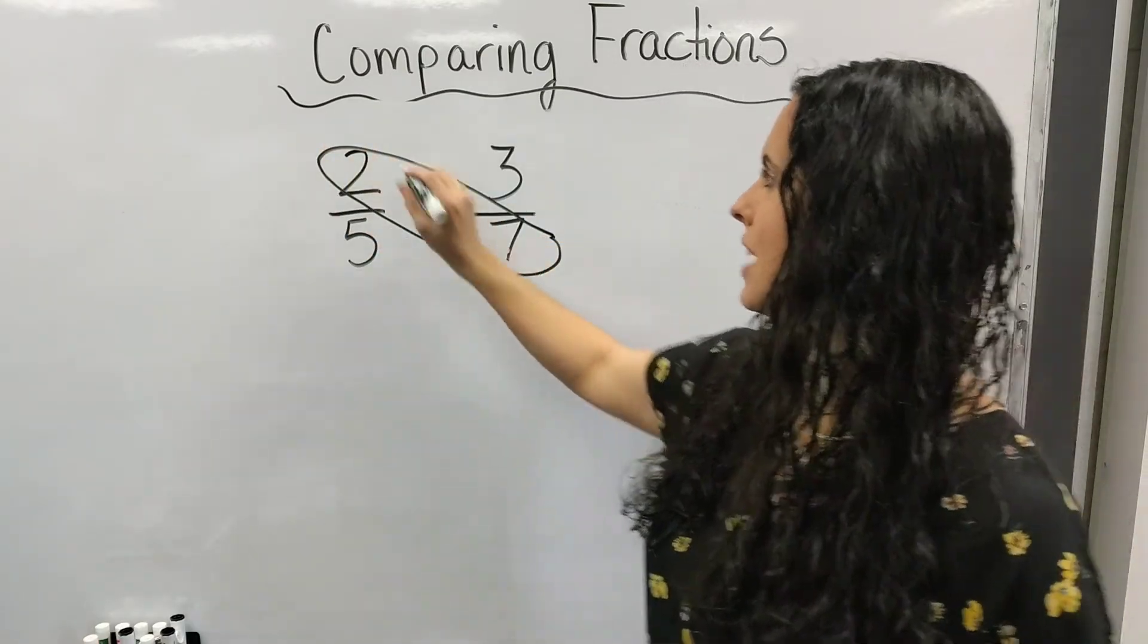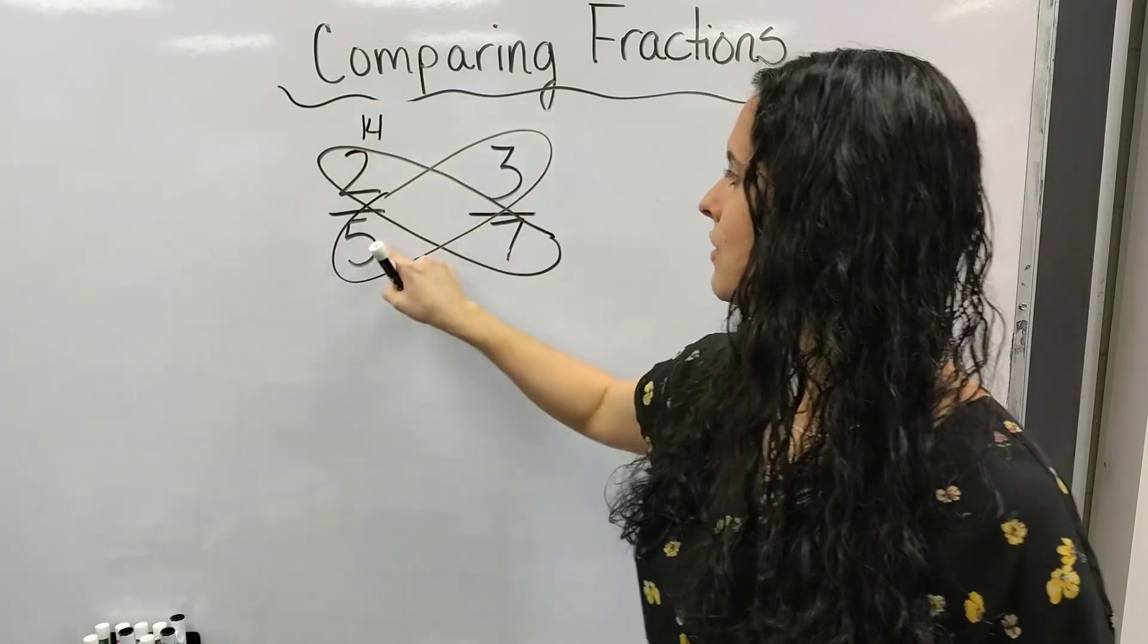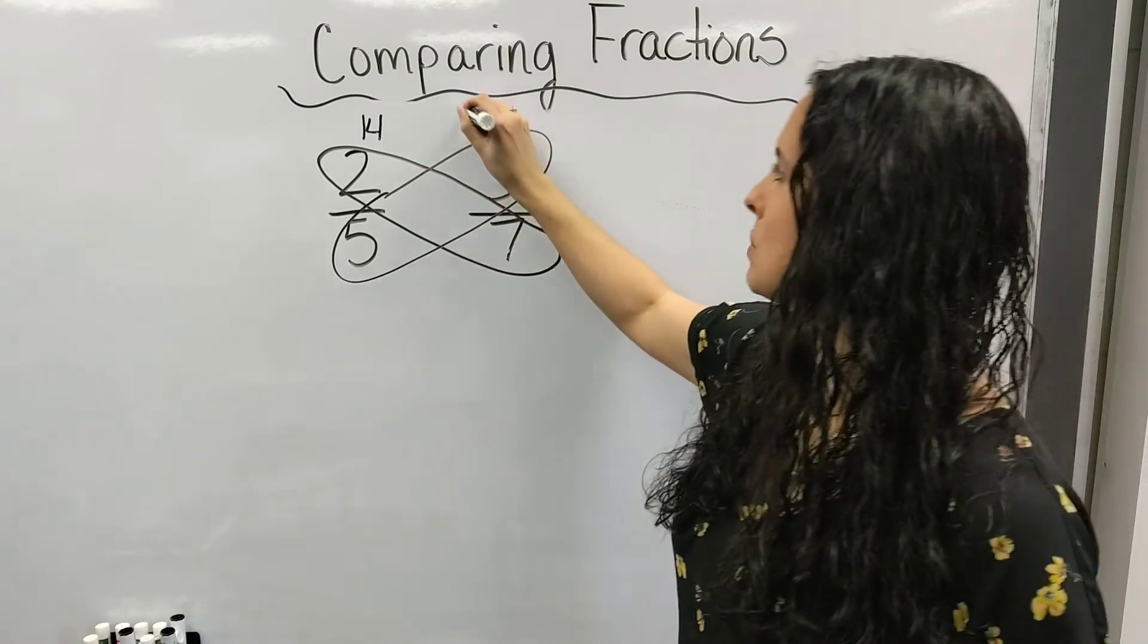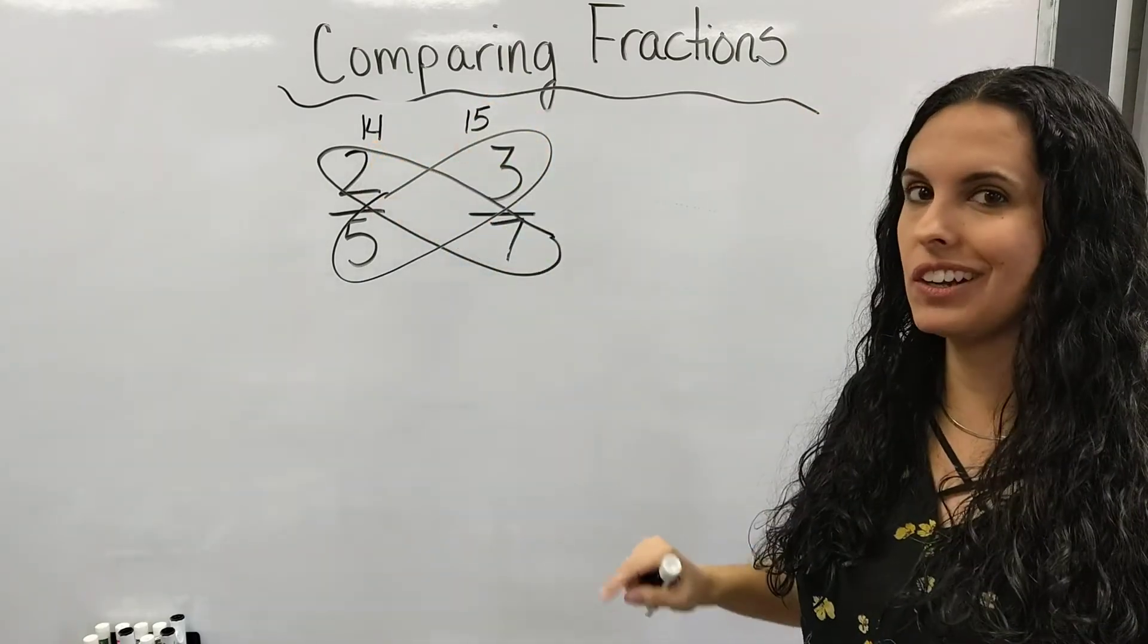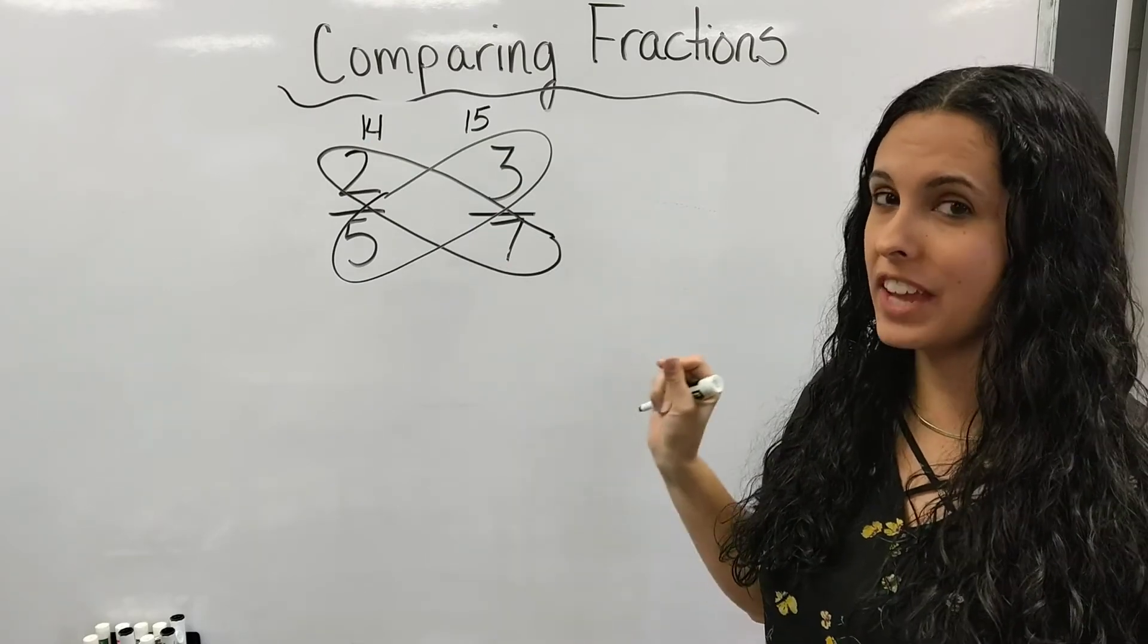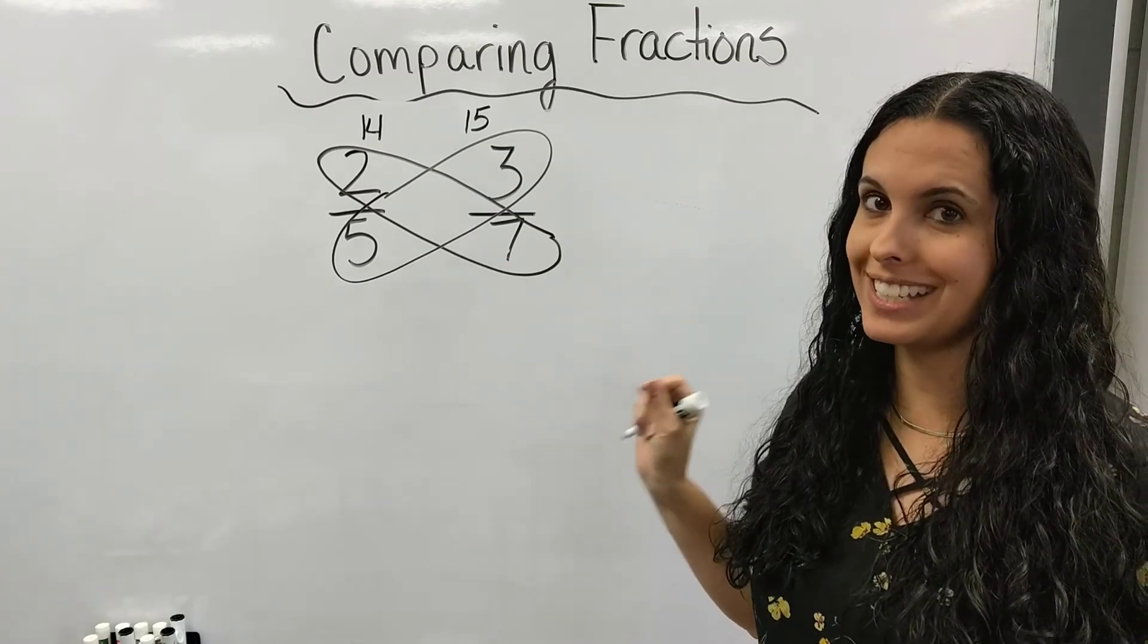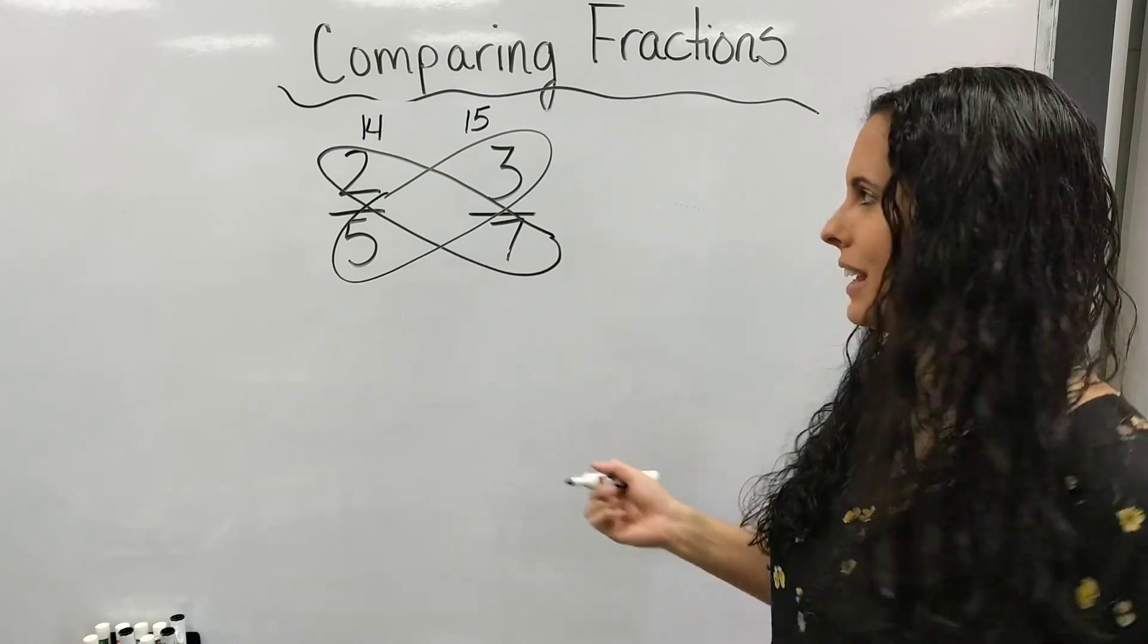So two times seven gives me 14. And five times three, that gives me 15. See how close 14 and 15 are? So if I were to draw those fractions, it would be very difficult to tell which one I did because when we hand-draw, sometimes we're not perfect when we make it.